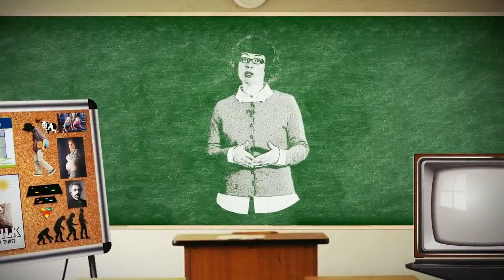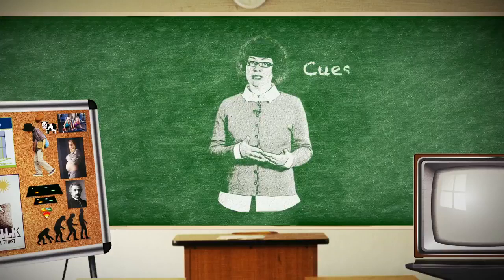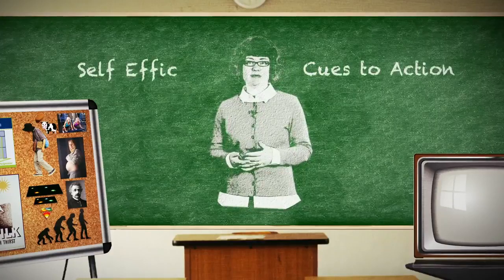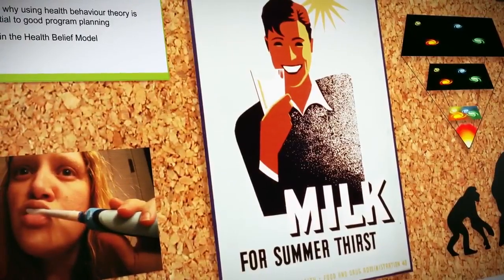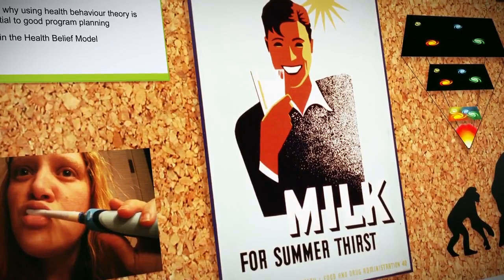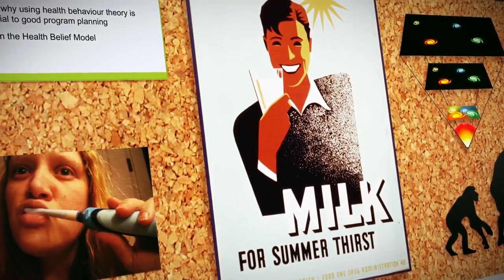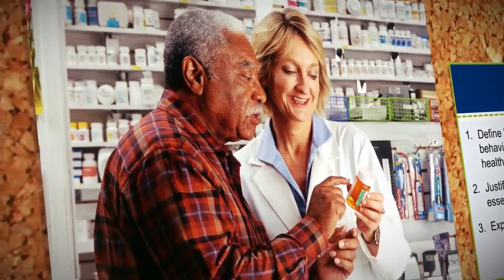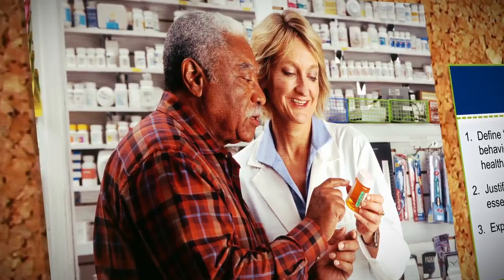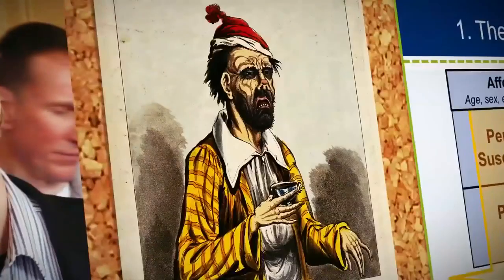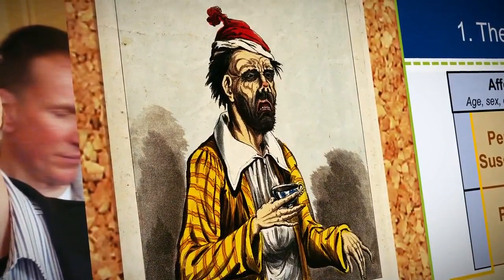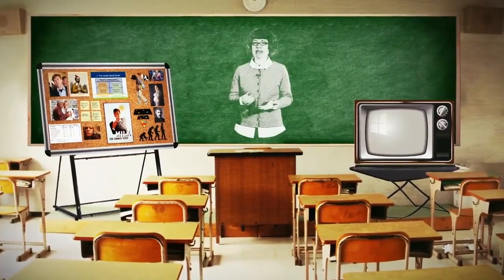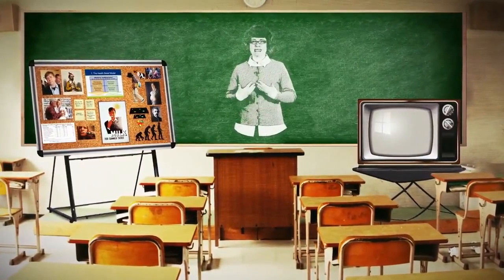There are two other important components of the health belief model: cues to action and self-efficacy. Cues to action serve as a trigger for behavior. Seeing a media campaign might serve as a cue to action. Others might be receiving advice, receiving a reminder from a clinic, becoming aware of bodily sensations such as feeling overly tired or experiencing dizziness, or something like illness — your own illness or that of someone you know. Exposure to these sorts of cues to action increase a person's readiness to take action.